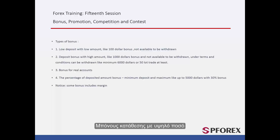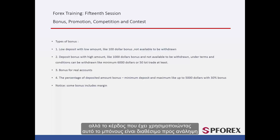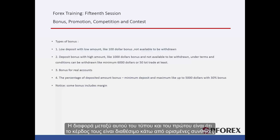Deposit Bonus with High Amount: for instance, a broker gives $1,000 to a party as a bonus, and again this cannot be taken out of the account by the party, but the profit they make using this bonus is available to be withdrawn. The difference between this type and the first one is that the profit is available to them only under some circumstances.